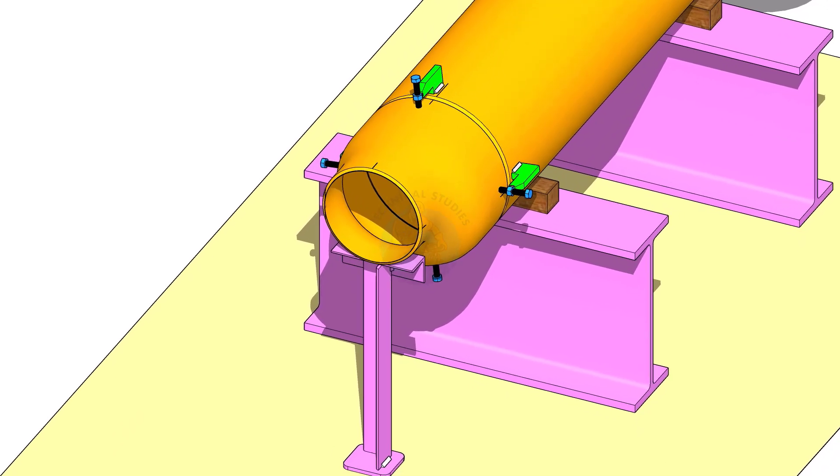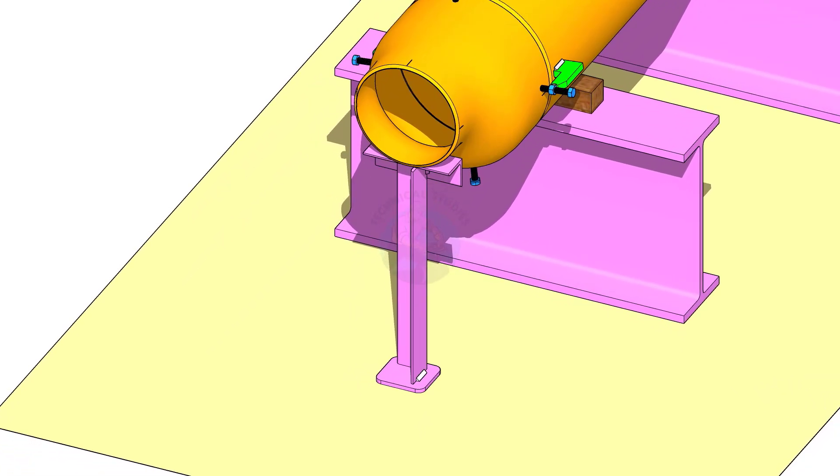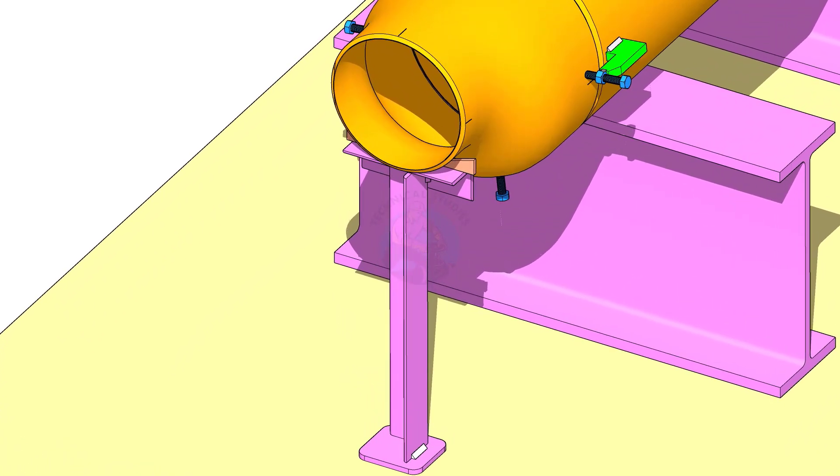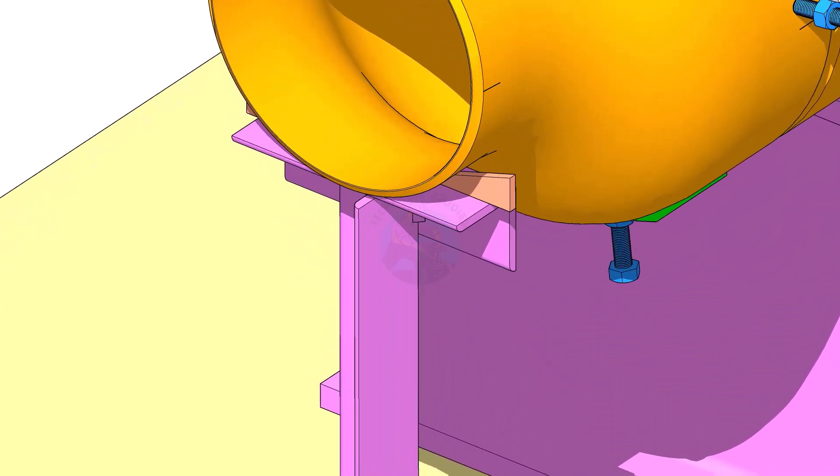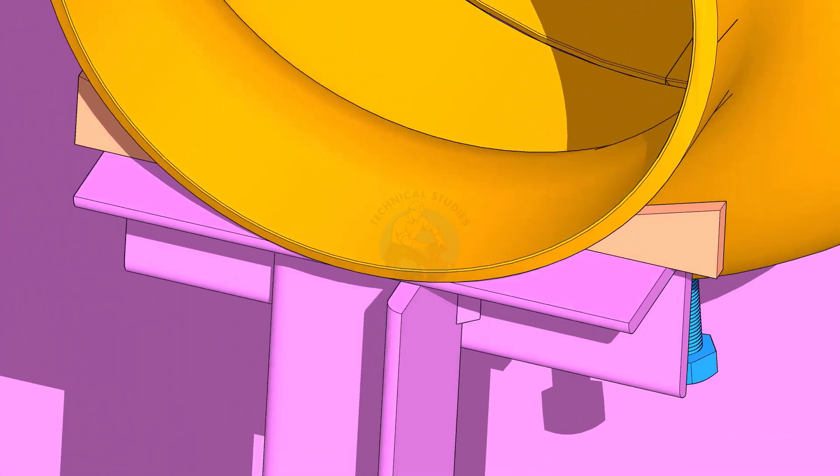Put the reducer in the clamps. Slightly tighten the bolts. Arrange proper supports below the reducer. The height of the support shall be adjustable. Here, I used simple wedges.